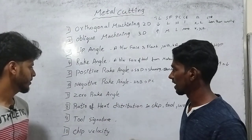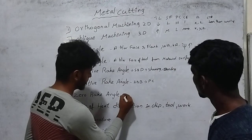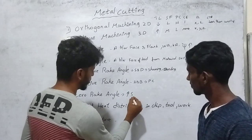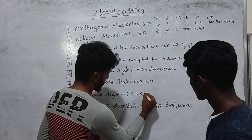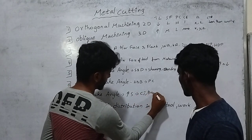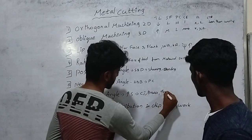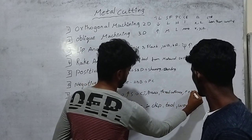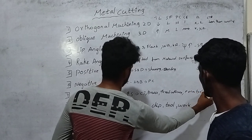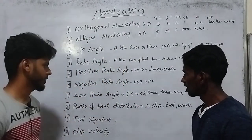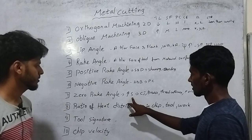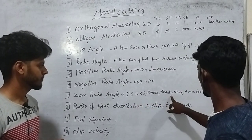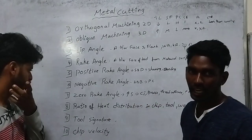We use zero rake angle when the strength is enough to work. The same force is used. Applications of zero rake angle include cast iron, brass, thread cutting, and form tools.